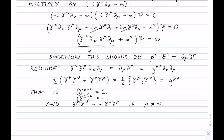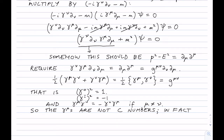So those are the requirements on the gamma constants. The gammas are not C-numbers — they're not regular complex numbers. They have to be matrices, or at least they can be represented as matrices.